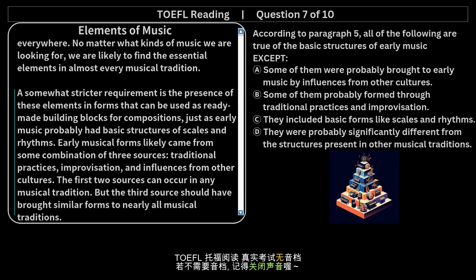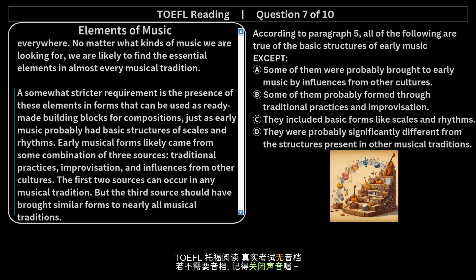Question 7 of 10. According to paragraph 5, all of the following are true of the basic structures of early music EXCEPT: a. Some of them were probably brought to early music by influences from other cultures. b. Some of them probably formed through traditional practices and improvisation. c. They included basic forms like scales and rhythms. d. They were probably significantly different from the structures present in other musical traditions.